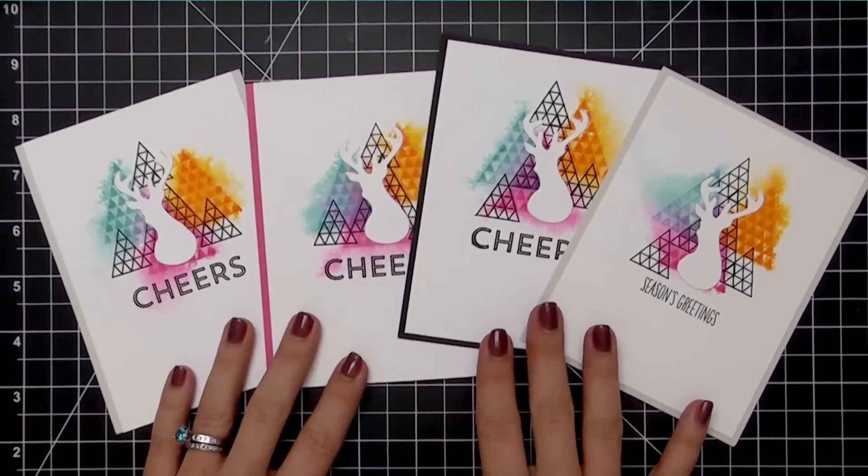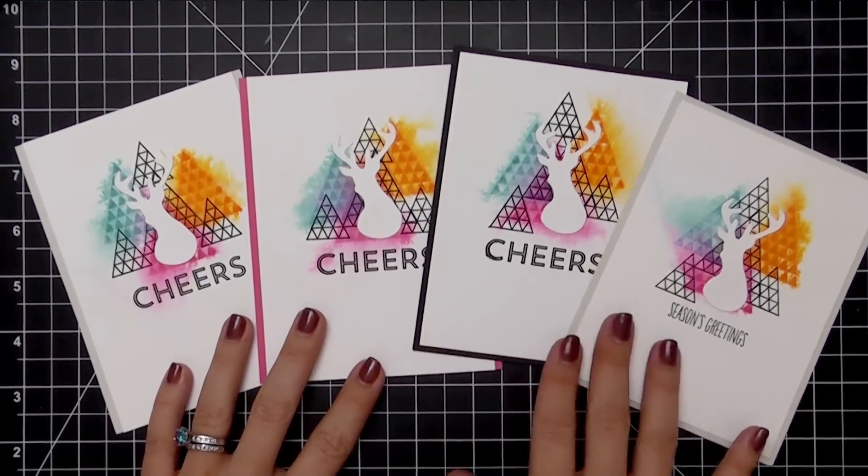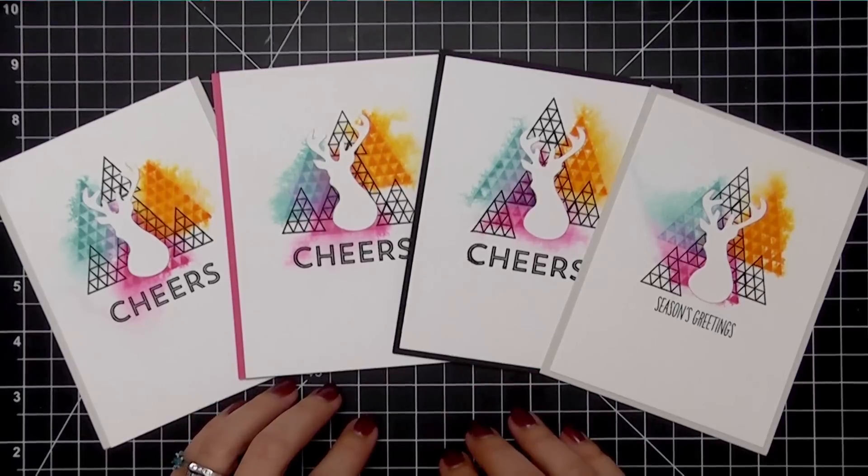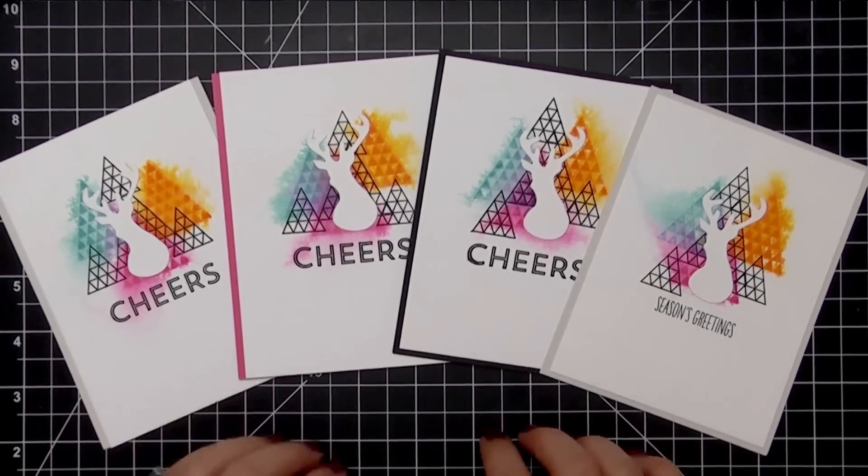This just switches things up a little bit so that I don't get bored with it. And that's really it. See, I told you these were simple. Here's a look at them matted on dove gray, sweet gelato, and black cardstock.